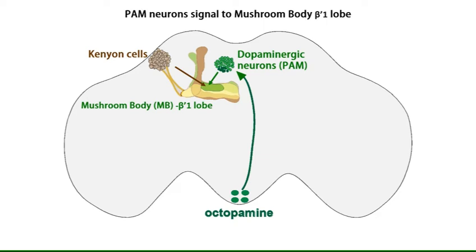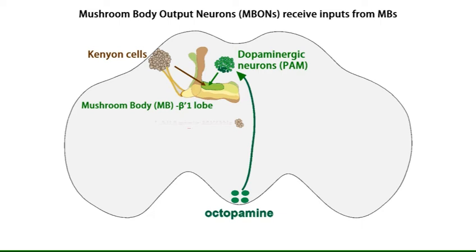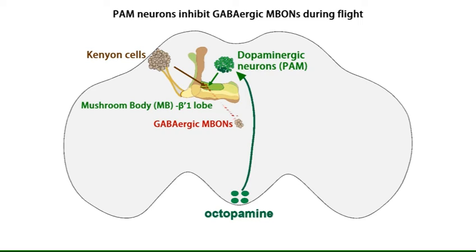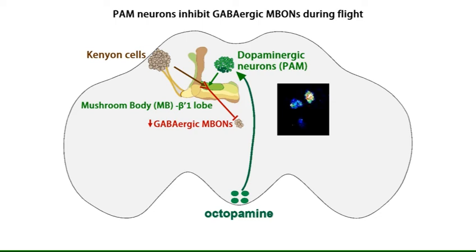But how does this happen? Synaptic signals from the mushroom bodies are processed and transferred to other regions of the brain by mushroom body output neurons. Interestingly, output neurons from the beta-prime-1 lobe release GABA, an inhibitory neurotransmitter. We found that activity in PAM neurons inhibited activity in the GABAergic output neurons from the beta-prime-1 lobe of the mushroom body, thus decreasing release of GABA from these neurons.